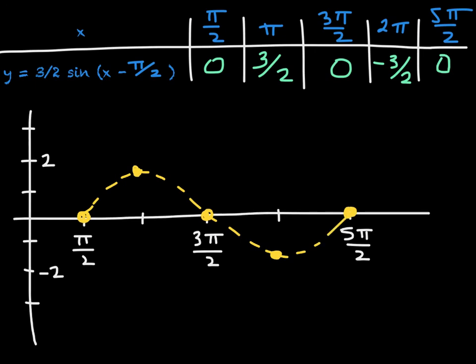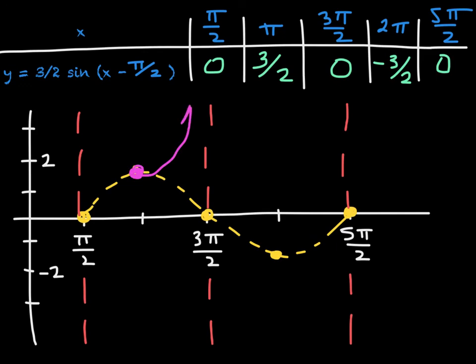What we're supposed to be graphing is the cosecant function. Wherever sine is 0 — whenever the sine function hits the x-axis — cosecant will be undefined because cosecant is the reciprocal of sine. So those are the locations of vertical asymptotes. Now we reciprocate the graph: from the left asymptote we go upward toward the maximum, and the other branch goes downward toward the vertical asymptotes. This gives one complete period for the cosecant function — one complete upward opening branch and one complete downward opening branch.